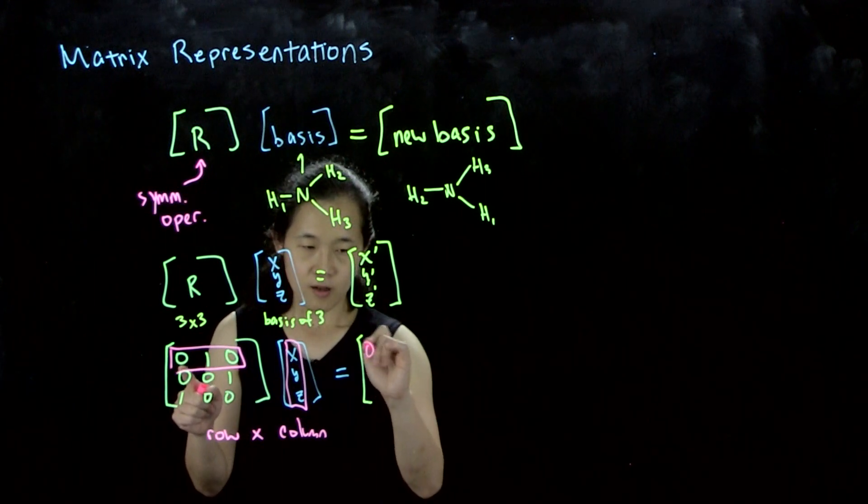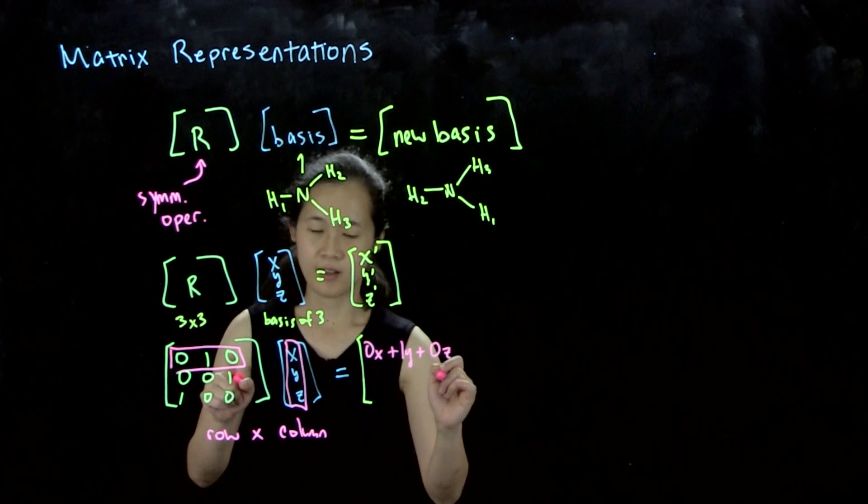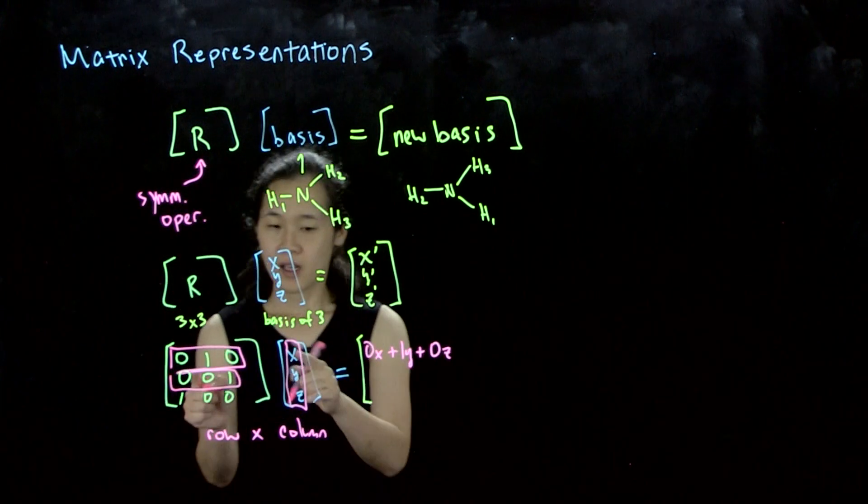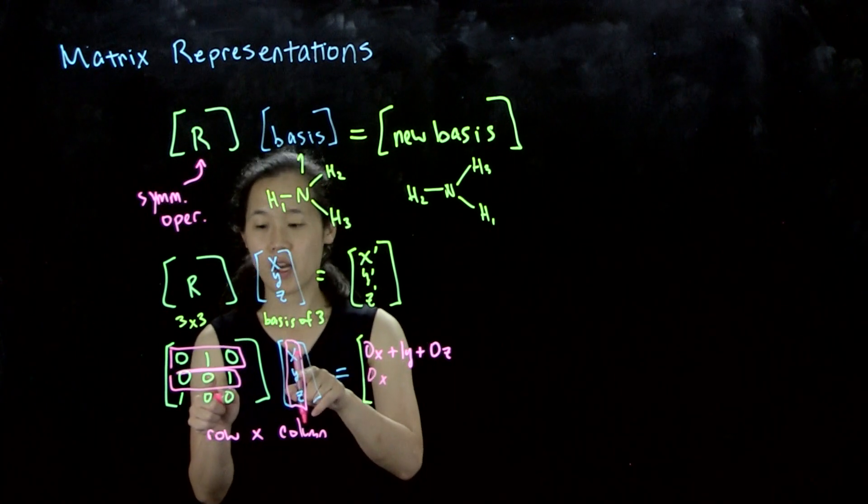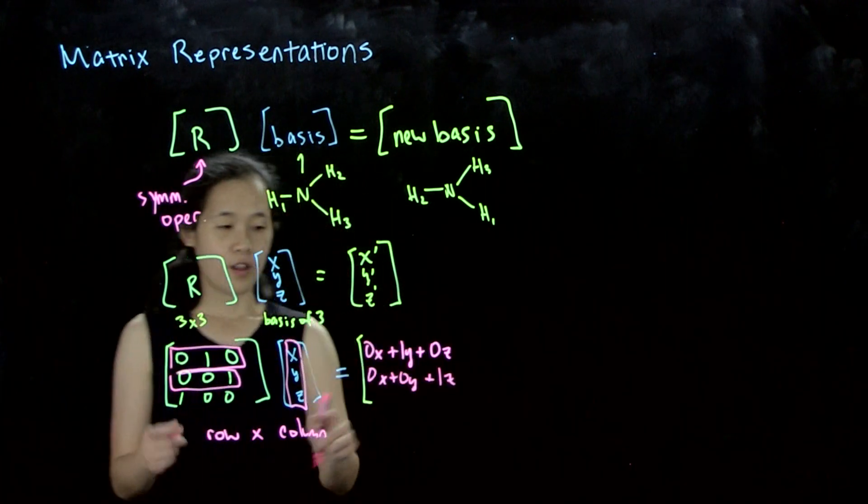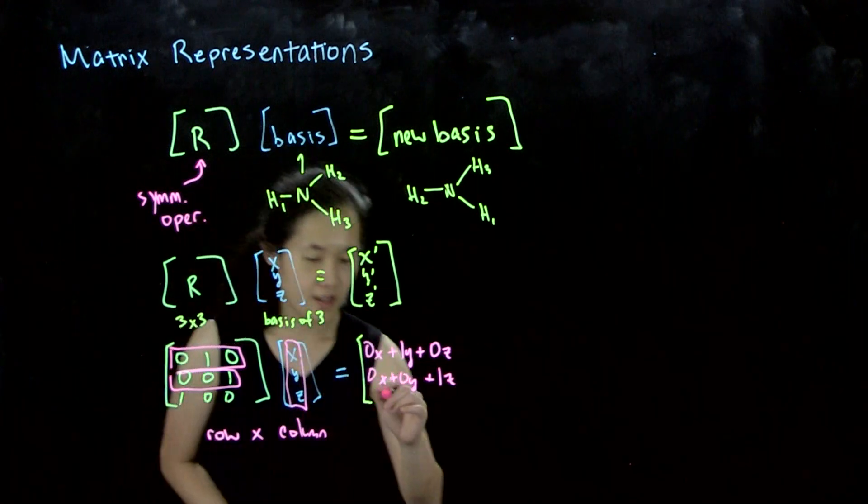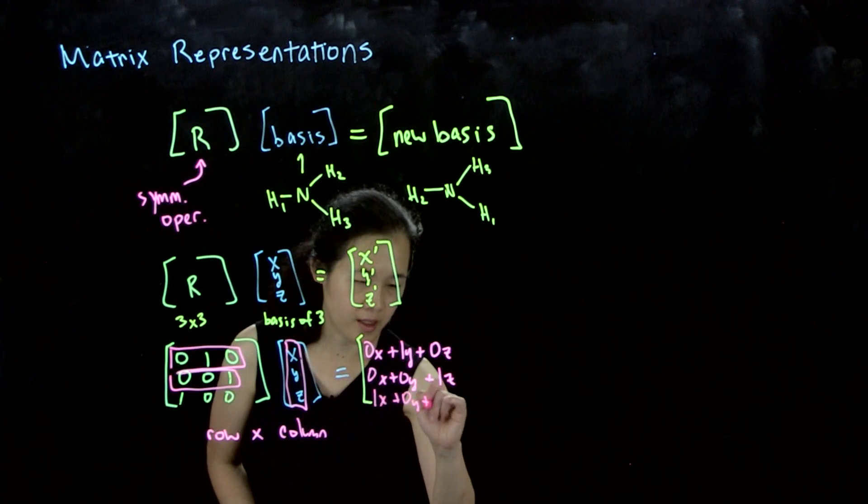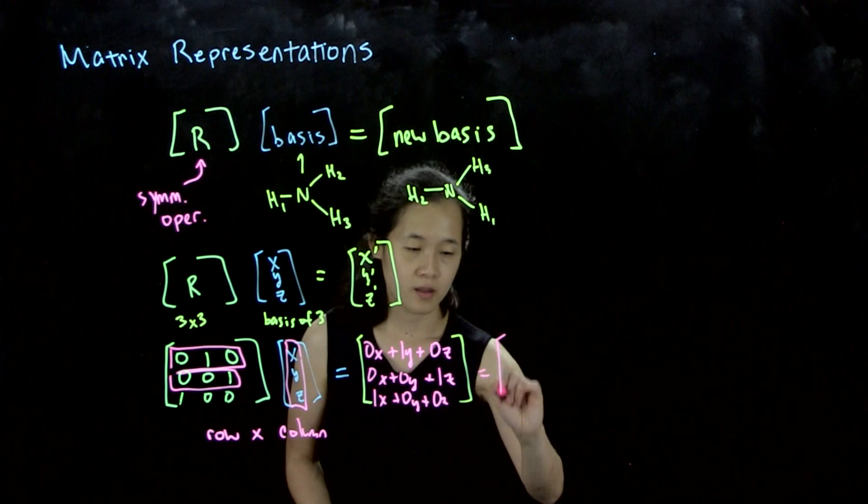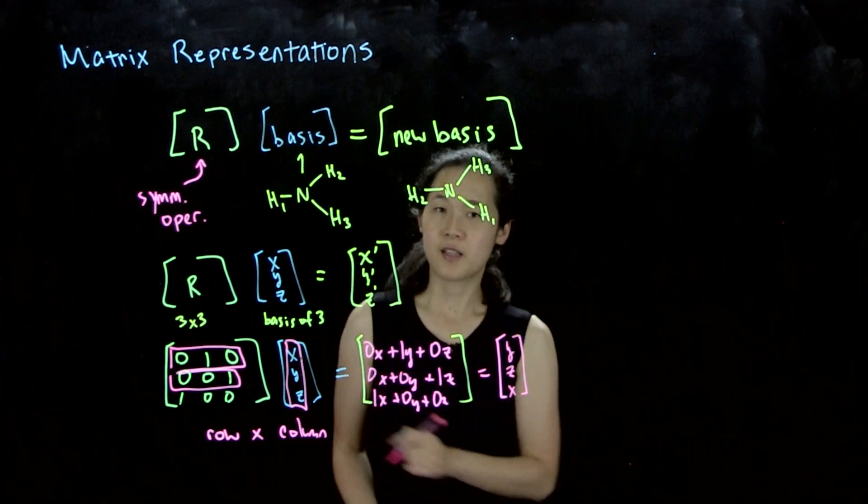For the second row times XYZ, this will be 0X plus 0Y plus 1Z. Our third element in the final product is 1X plus 0Y plus 0Z. So our final product is Y, Z, X. That's our review of matrix algebra.